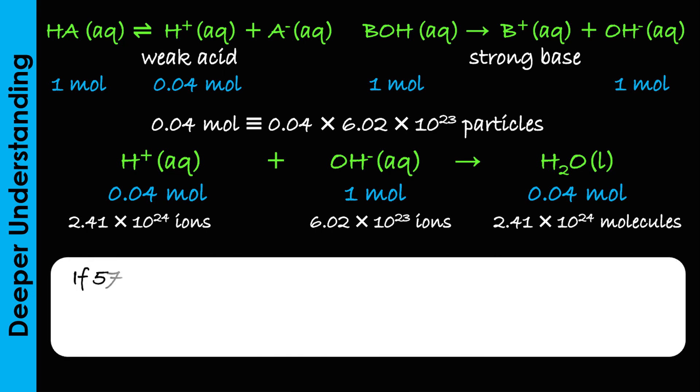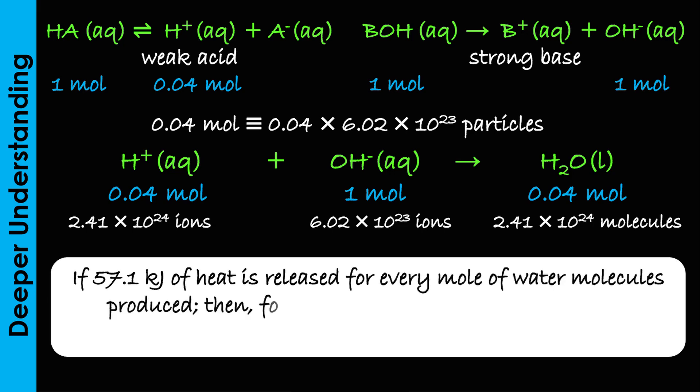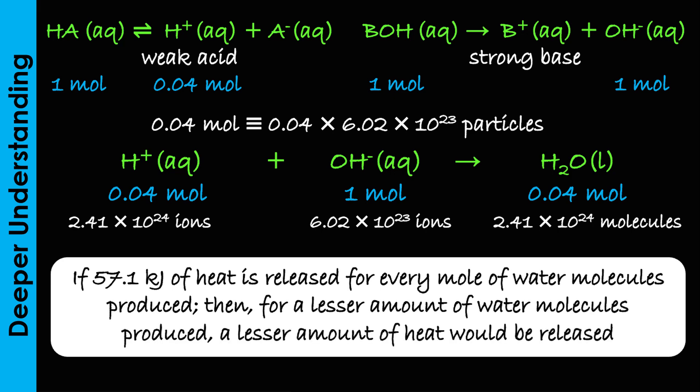So, if –57.1 kJ of heat is released for every mole of water molecules produced, then for a lesser amount of water molecules produced, a lesser amount of heat would also be released.